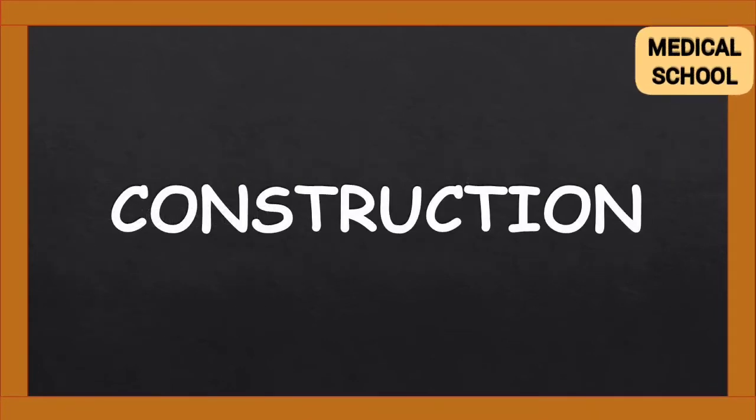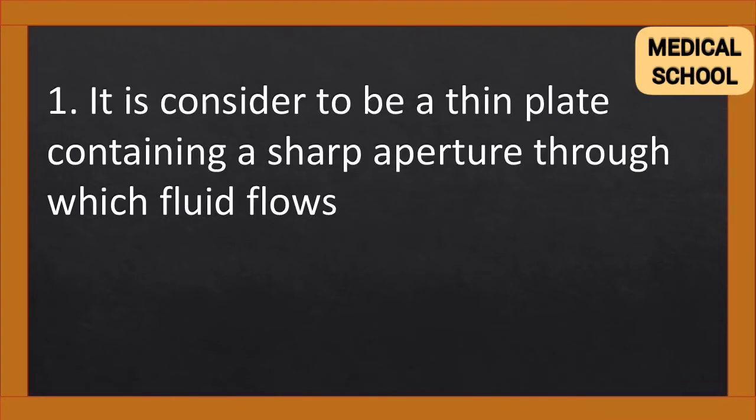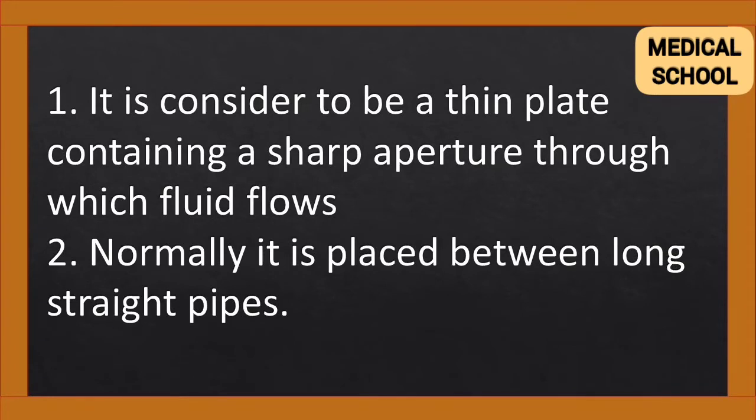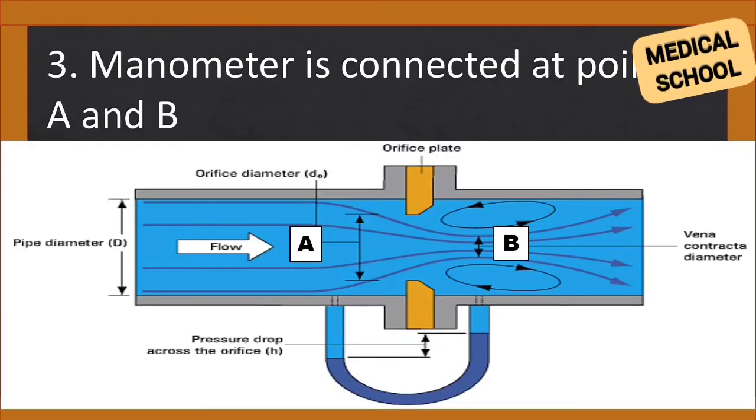Construction. It consists of a thin plate containing a sharp aperture through which fluid flows. Normally it is placed between long straight pipes. Manometer is connected at points A and B.